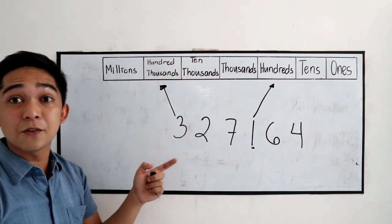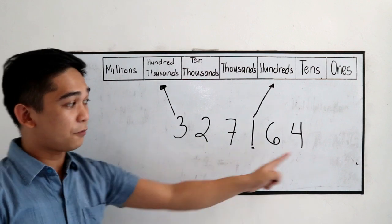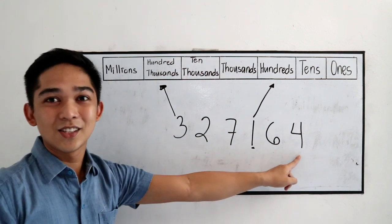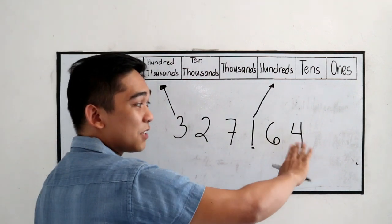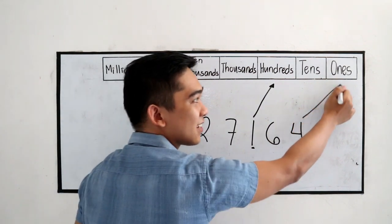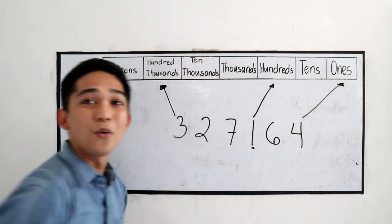How about what is the place value of number 4? So, it is our first digit from the right. So, that is in the place value of ones.